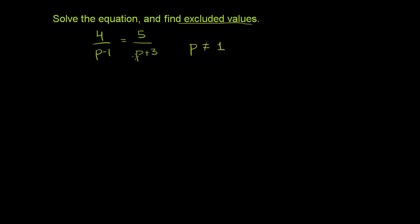And over here, if p was at negative 3, then this denominator would be 0, and it would be undefined. So p cannot be equal to 1, or negative 3. So these right here are our excluded values.